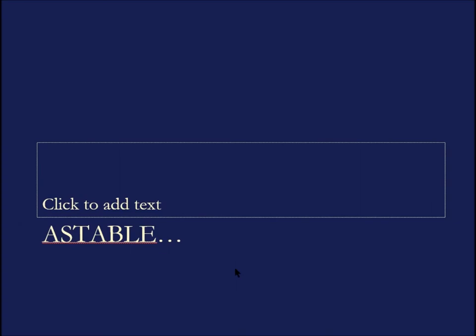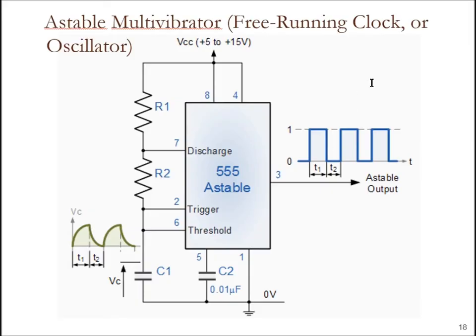The third and final form of how we configure this 555 timer is the astable free running clock or oscillator. This one has no input. You power it up after it's built, and it's designed for a specific duty cycle, a specific period, a specific frequency. Once you power it up, it just goes.